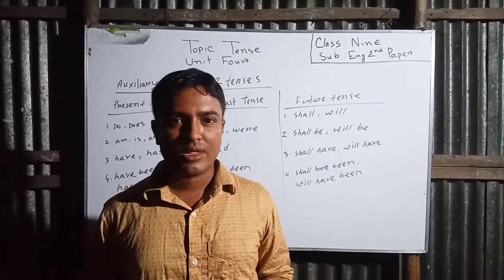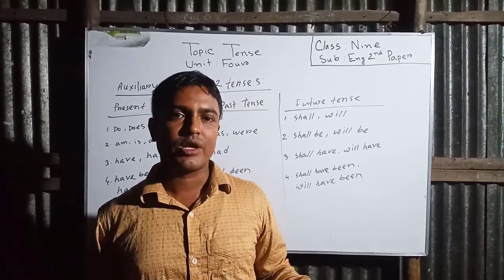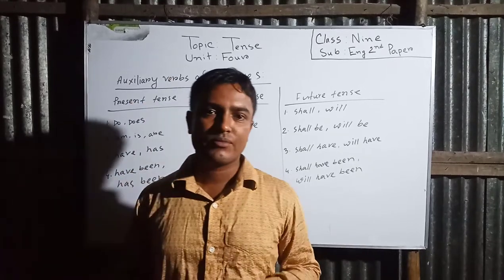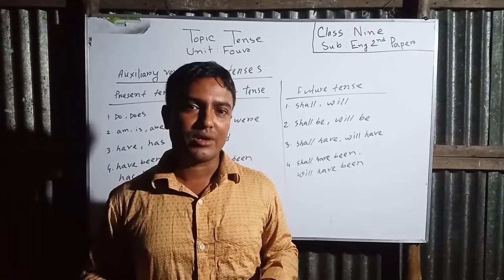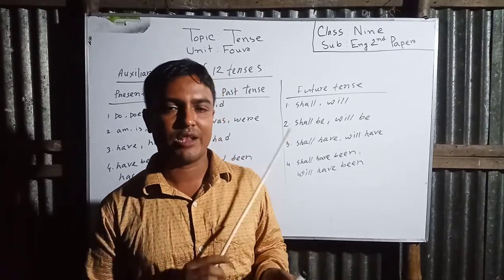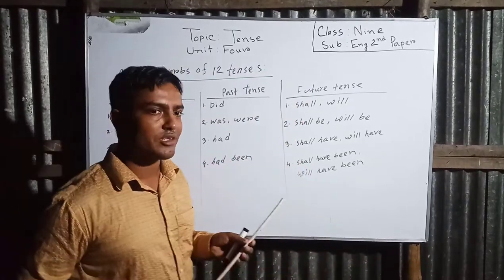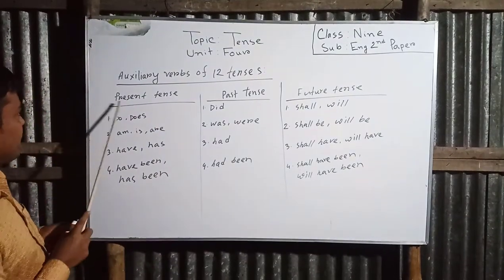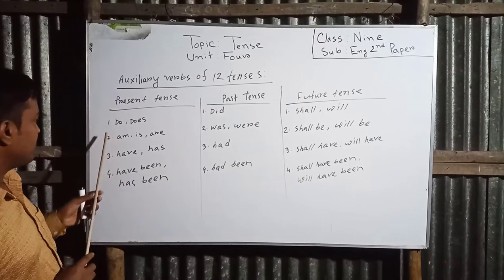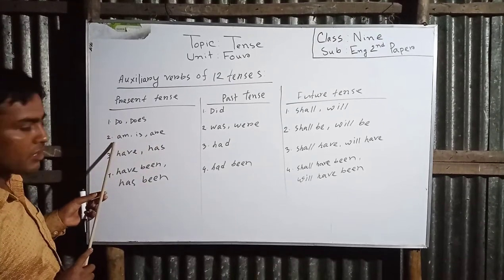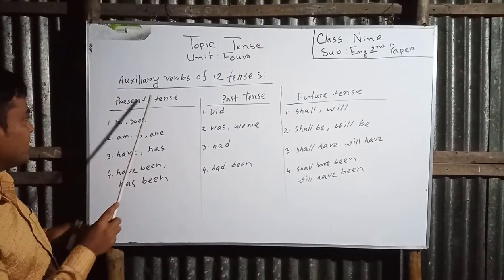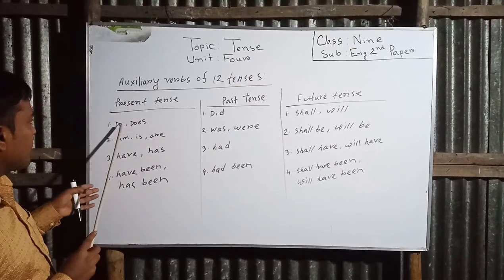Dear students, now let's see the auxiliary verbs of the twelve kinds of tense. You must write down and memorize these helping verbs if you want to learn tense fluently. Look at the board please. For present tense: one, do/does — present indefinite; two, am/is/are — present continuous; three, have/has — present perfect; four, have been/has been — present perfect continuous.